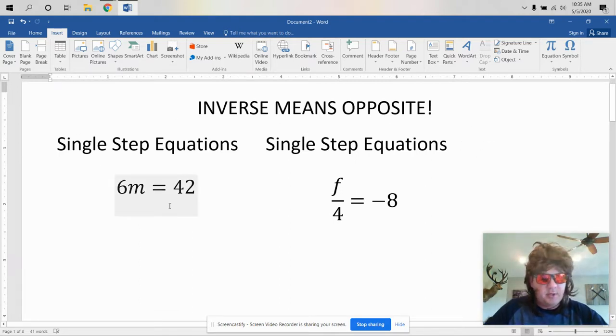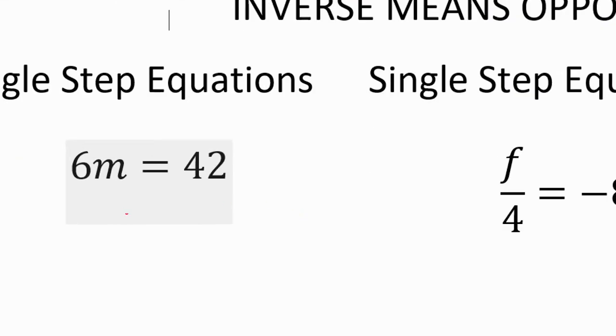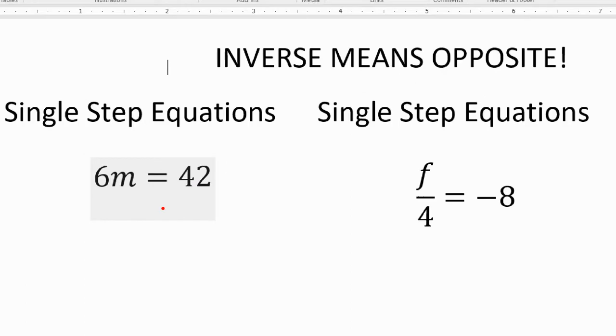Now, first one I'm gonna zoom in on here. Six times m equals 42. Says times. Let me first set up my lines. Always use the lines.